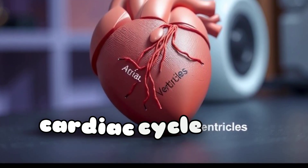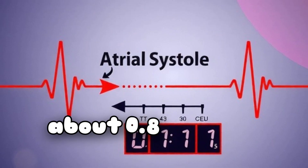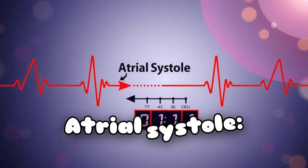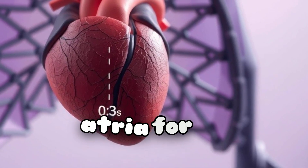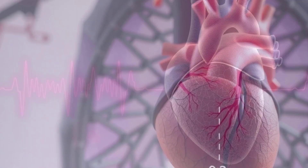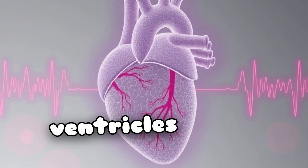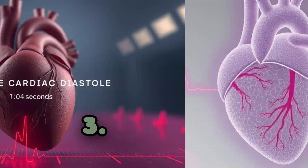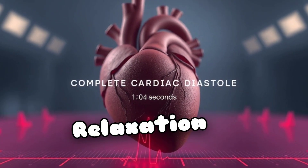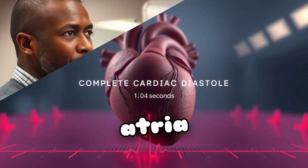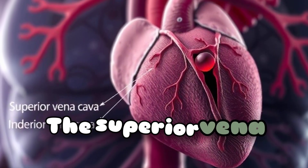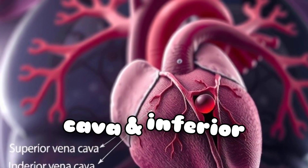Each cardiac cycle lasts about 0.8 seconds and consists of three stages: (1) atrial systole — contraction of the atria for 0.1 seconds; (2) ventricular systole — contraction of the ventricles for 0.3 seconds; and (3) complete cardiac diastole — relaxation of the atria and ventricles for 0.4 seconds.